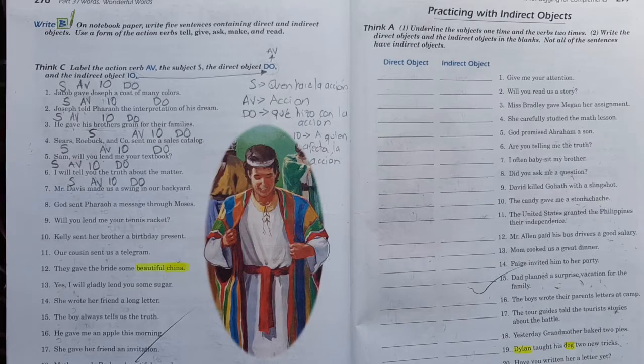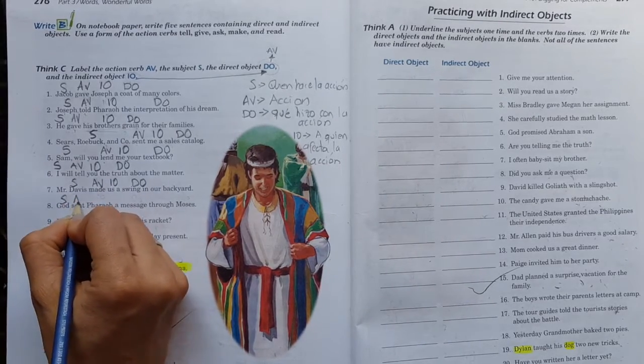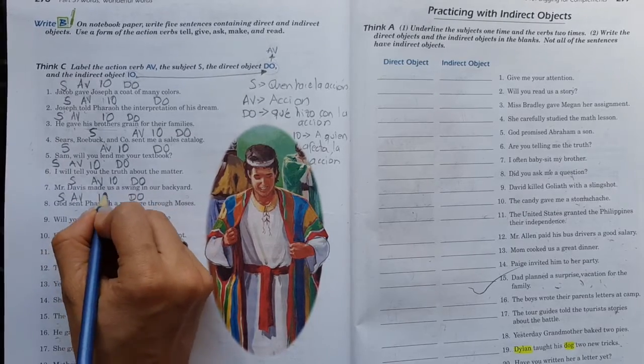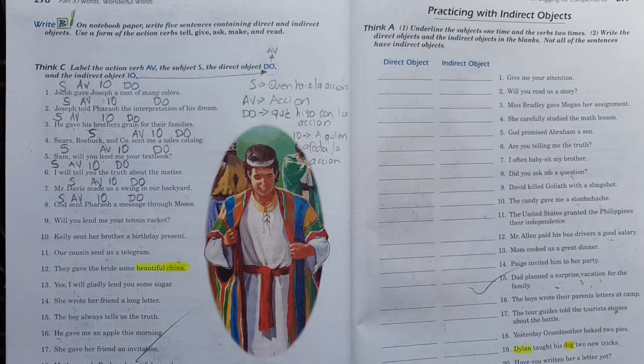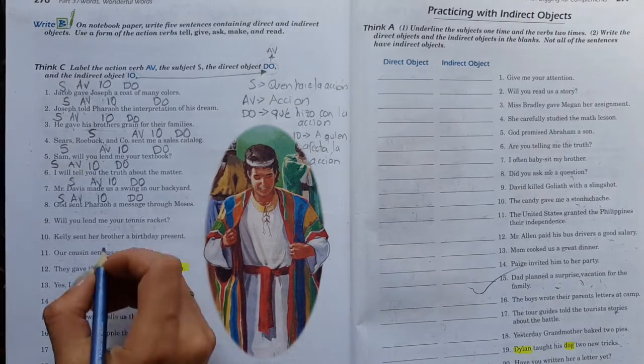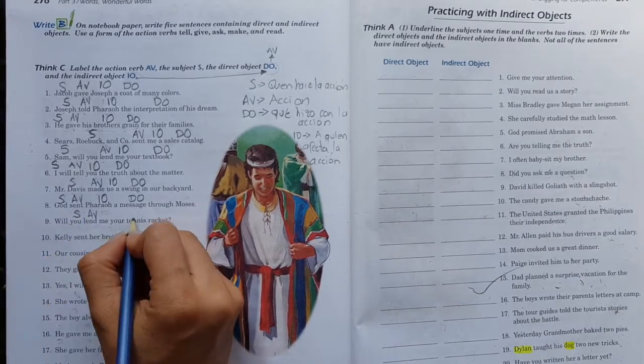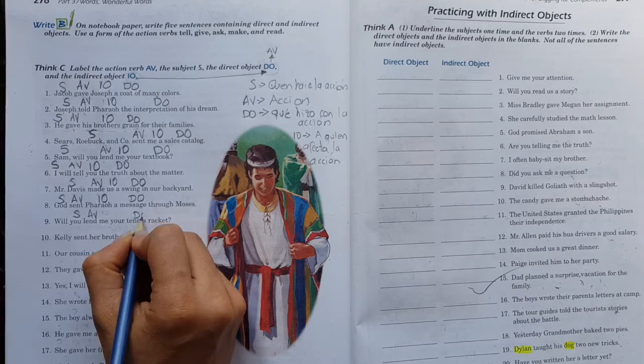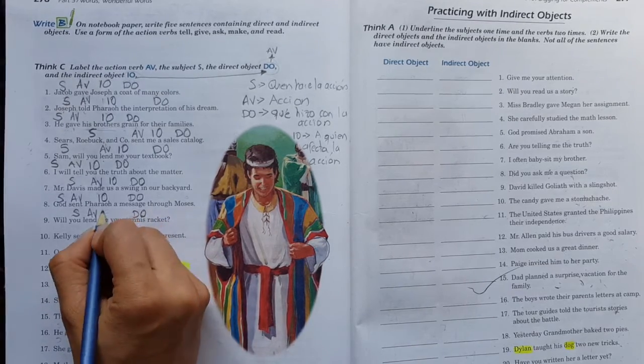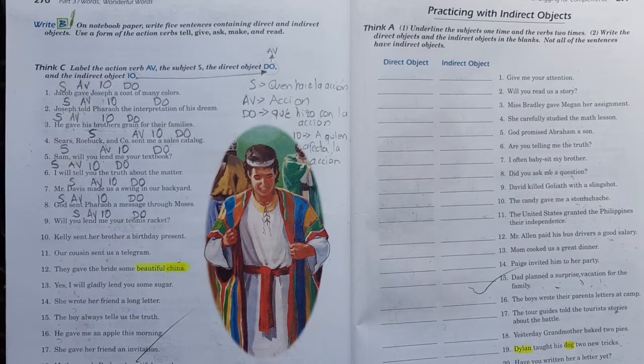Entonces, Mr. Davis es el sujeto. ¿Qué hizo? Hizo. ¿Qué hizo? Un swing en nuestro patio. ¿Y a quién se lo hizo? A nosotros. Pilas acá. Este es un muy buen ejemplo. ¿Qué fue ese algo? Un swing. ¿Y a quién ese swing que hizo Don Davis? Pues a nosotros. Pilas con esa lógica. Number eight.